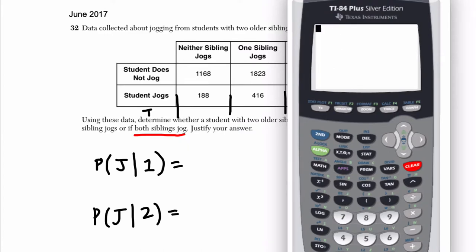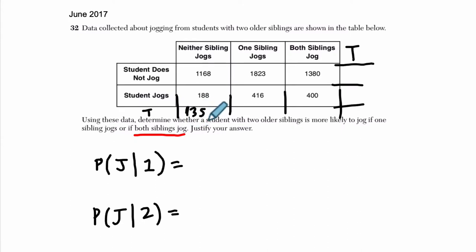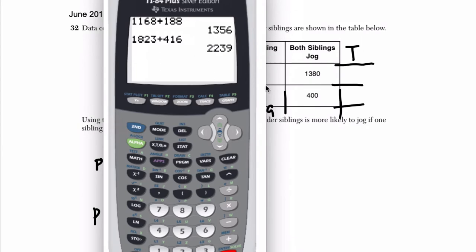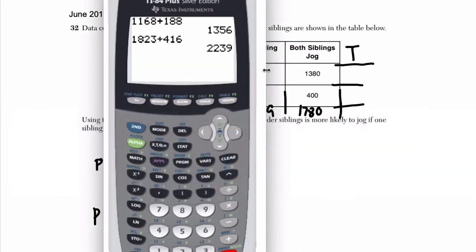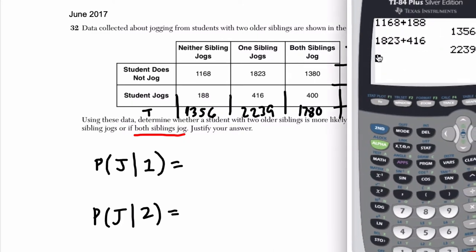Let's add them real quick. We've got 1168 plus 188, which is 1356. Then we've got 1823 plus 416, which is 2239. So we've got 1356 and 2239. Now, I know that I don't even need all these things, but I think that often setting these problems up is pretty helpful. Here we've got 1780, and then in our rows, we've got to add these groups of three numbers.